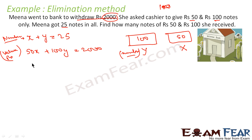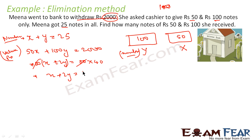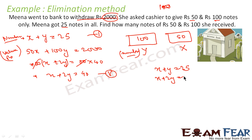Let me simplify. We have two equations: x plus y equals 25, and x plus 2y equals 40. Since the coefficient of x is the same, I subtract the first from the second. This gives y equals 15.